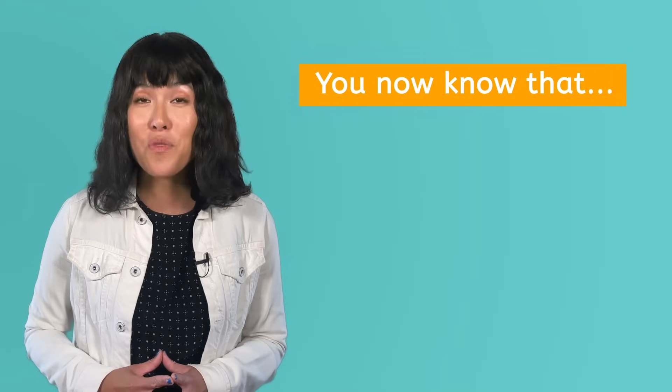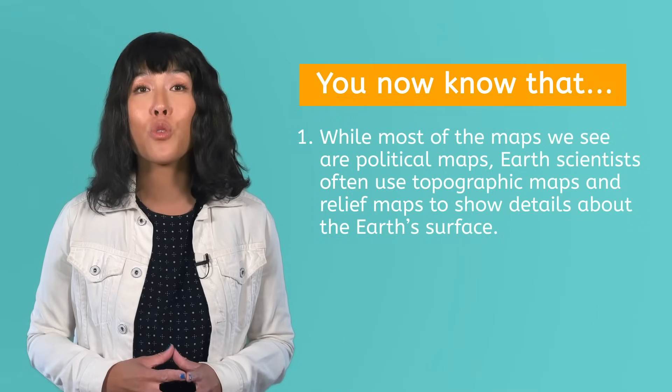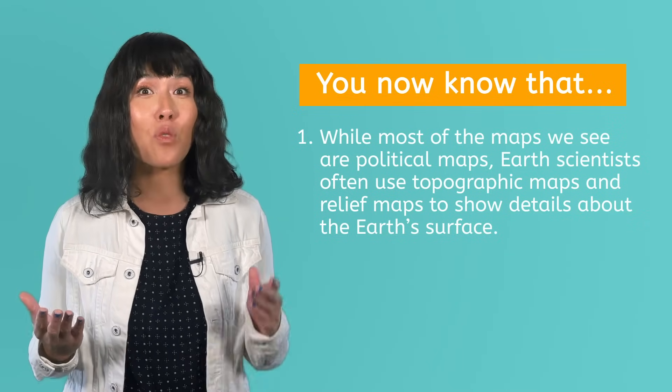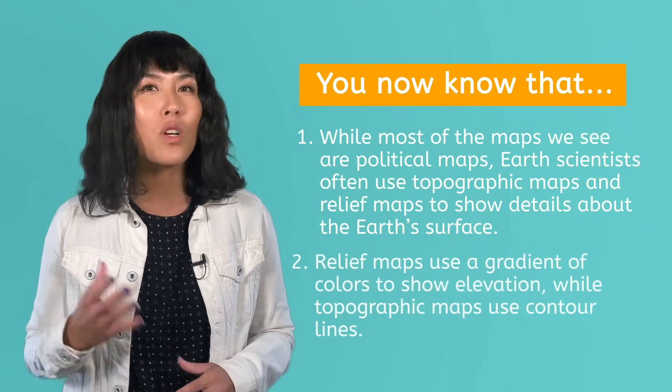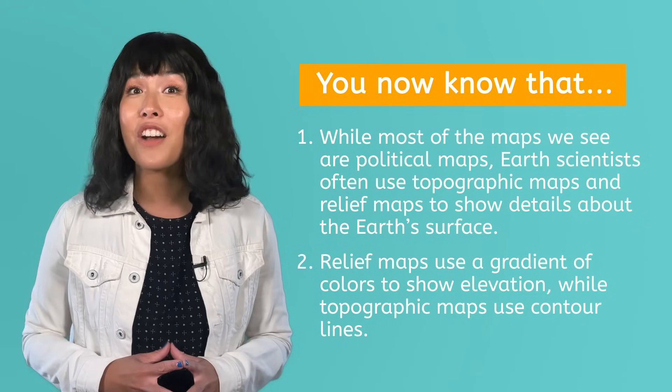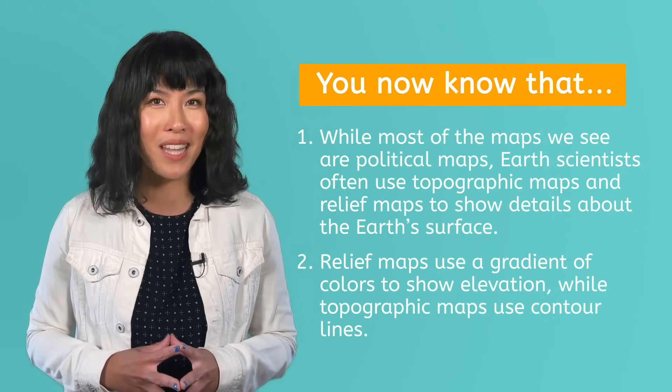So let's go over what we learned today. You now know that while most of the maps we see are political maps, Earth scientists often use topographic maps and relief maps to show details about the Earth's surface. Relief maps use a gradient of colors to show elevation, while topographic maps use contour lines. Be sure to check out the games and extension activities that go with this lesson to practice reading these different kinds of maps. And remember, in Earth science, as in life, you rock!